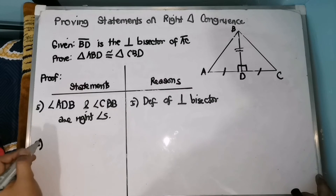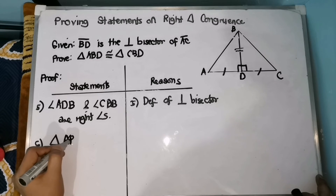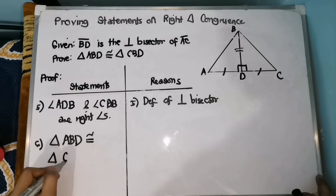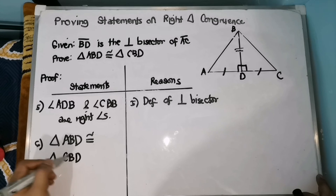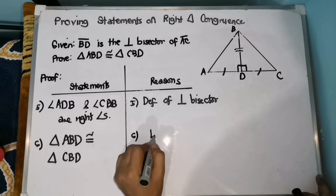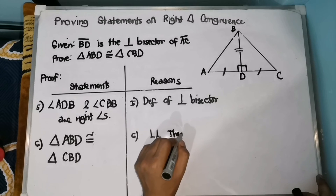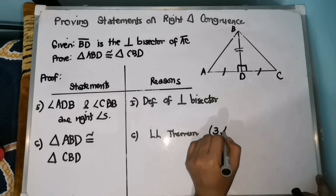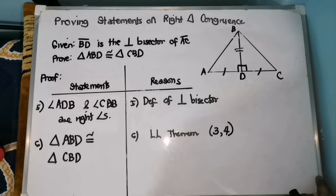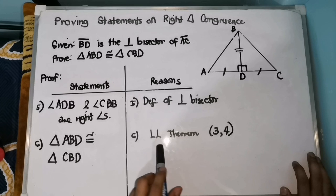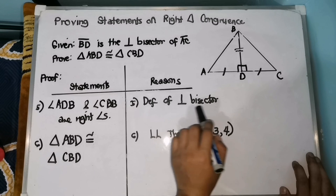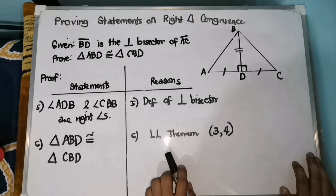For number 6, we can now say that triangle ABD is congruent with triangle CBD by the LL theorem, supported by statements 3 and 4. That's how we prove statements on right triangle congruence. The important thing here is that you know many terminologies and concepts — just like the perpendicular bisector, reflexive property, and etc. There are many properties that you can apply here.